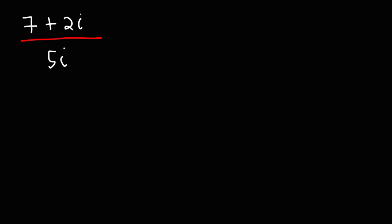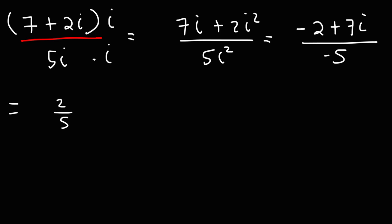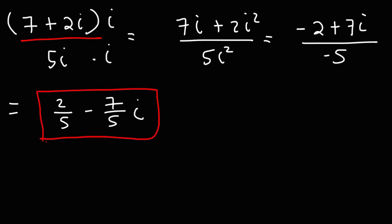Now what if we have a complex number divided by a pure imaginary denominator? In this situation, the best thing to do is to multiply the top and the bottom by i. 7 times i is 7i, 2i times i is 2i squared, and 5i times i is 5i squared. Since 2i squared is negative 2 and 5i squared is negative 5, we get negative 2 over negative 5, which is positive 2 over 5, plus 7i over negative 5, which is negative 7 over 5 times i. So the answer in standard form is (2 over 5) minus (7 over 5)i.